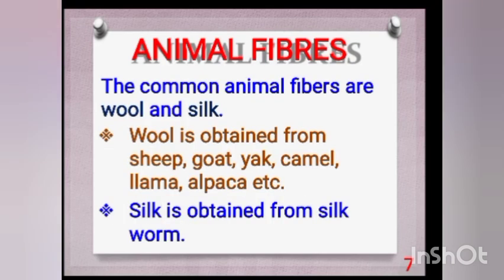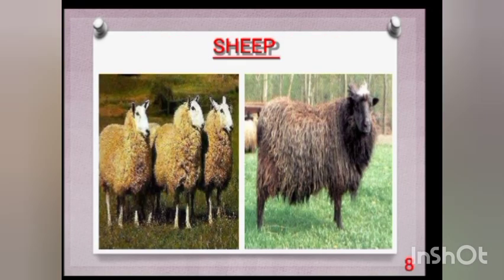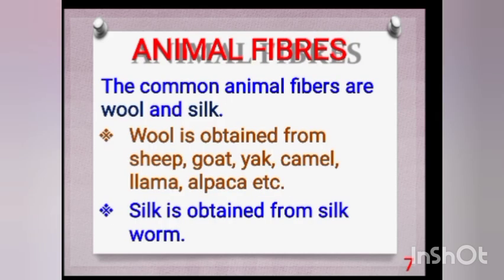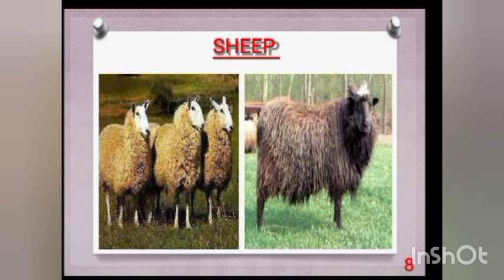Animal fibers are fibers obtained mainly from animals. There are two animal fibers: wool and silk. Wool is obtained from the hairs of animals like goat, sheep, yak, and camel. Silk is obtained from the cocoon of the silkworm. In the picture you can see a sheep, from which we also obtain wool.